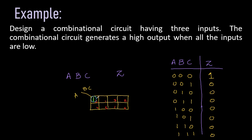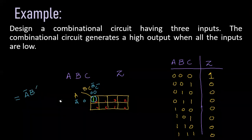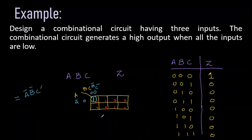Now we are going to simplify the K-map. We are having only one entry and the corresponding value for A is zero, and B and C are also zero. Solving this K-map: A being zero is represented by A complement, B being zero is B complement, and C being zero is C complement. We are going to get our simplified expression which is A complement, B complement, and C complement.